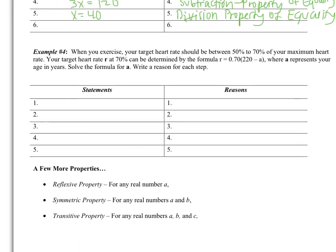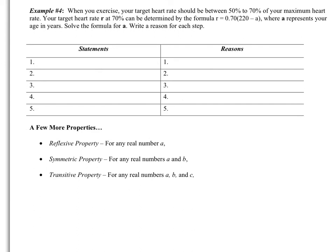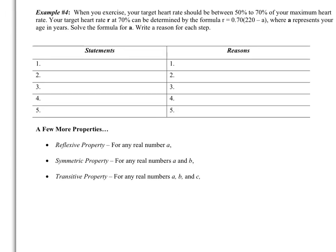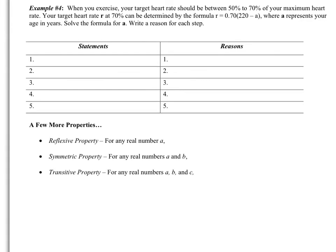What I would like you to do right now is try example 4 on your own. This time it says: when you exercise, your target heart rate should be between 50% to 70% of your maximum heart rate. Your target heart rate R at 70% can be determined by a formula where A represents age in years. Solve the formula for A — rewrite the equation so that it's A equals instead of R equals. Pause the video, try it on your own, and come back when you are finished.